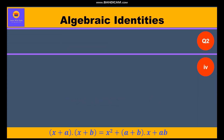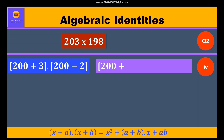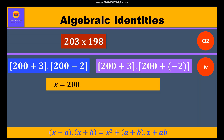Now the fourth question: 203 into 198. Here, 203 can be written as 200 plus 3 and 198 as 200 minus 2, which equals 200 plus 3 into 200 plus (minus 2). So x = 200, a = 3, b = minus 2. We shall substitute these values in identity 5.